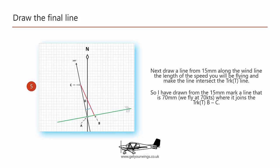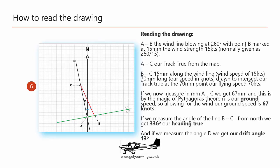Once we've done that we can take a look at what each of the elements are and how we read them. So line A to B, the wind line, 15mm indicates our wind strength. AC on our track true, the heading that we drew.